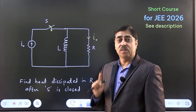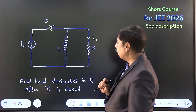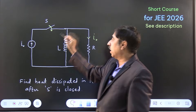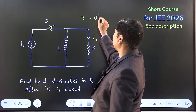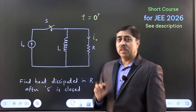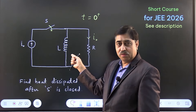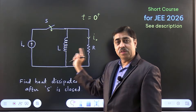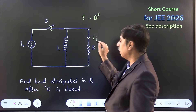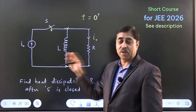The moment you close this switch, this is the situation. But what can you say about the rate of change of current through the inductor? The current is 0 right now. At time t = 0+, immediately after the switch is closed, the current through the inductor is 0, but the potential difference across the resistor is R × I₀. The same potential difference must be seen across the inductor because they are in parallel.